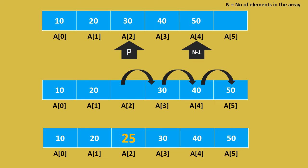After moving 50, 40 and 30 to the respective higher order positions, now we are left with an empty place at array second location. The new element, 25, now needs to be introduced at that empty second location.